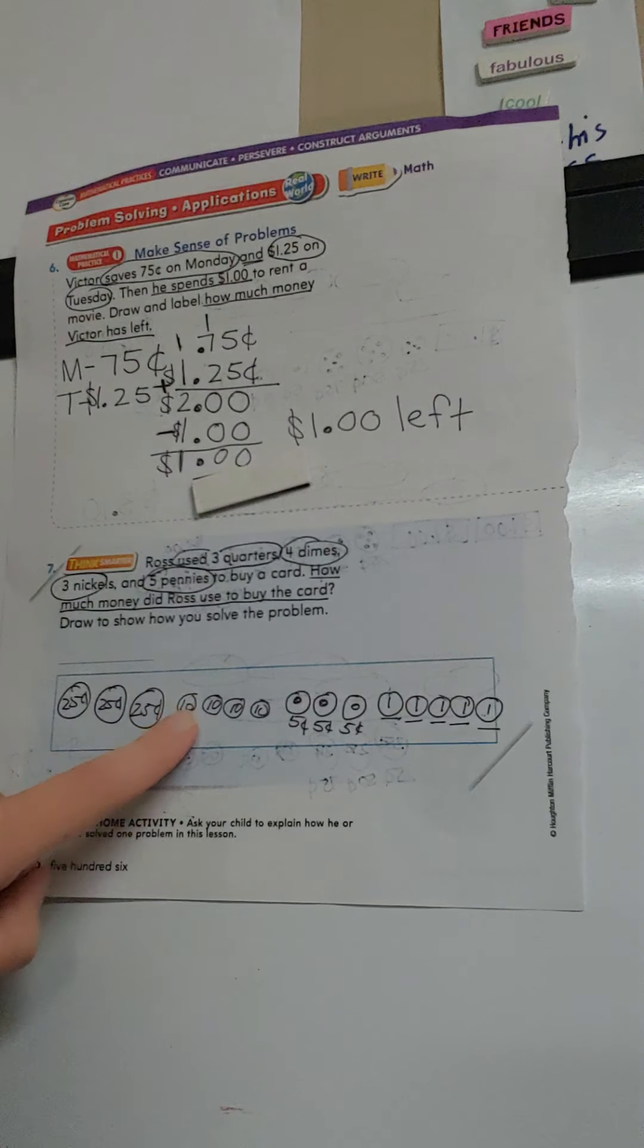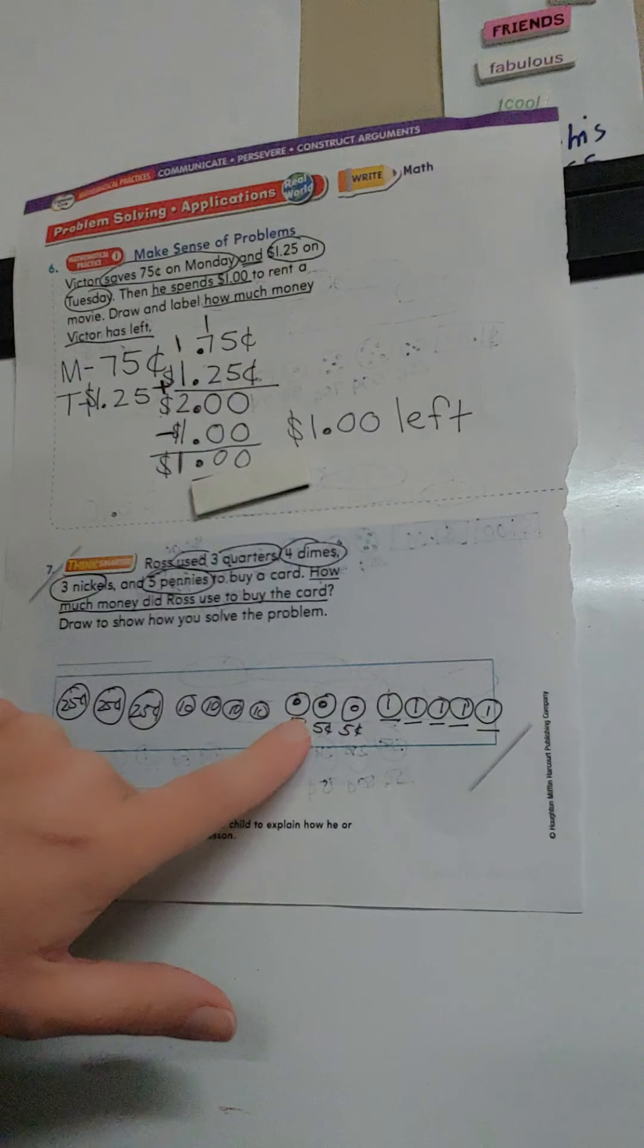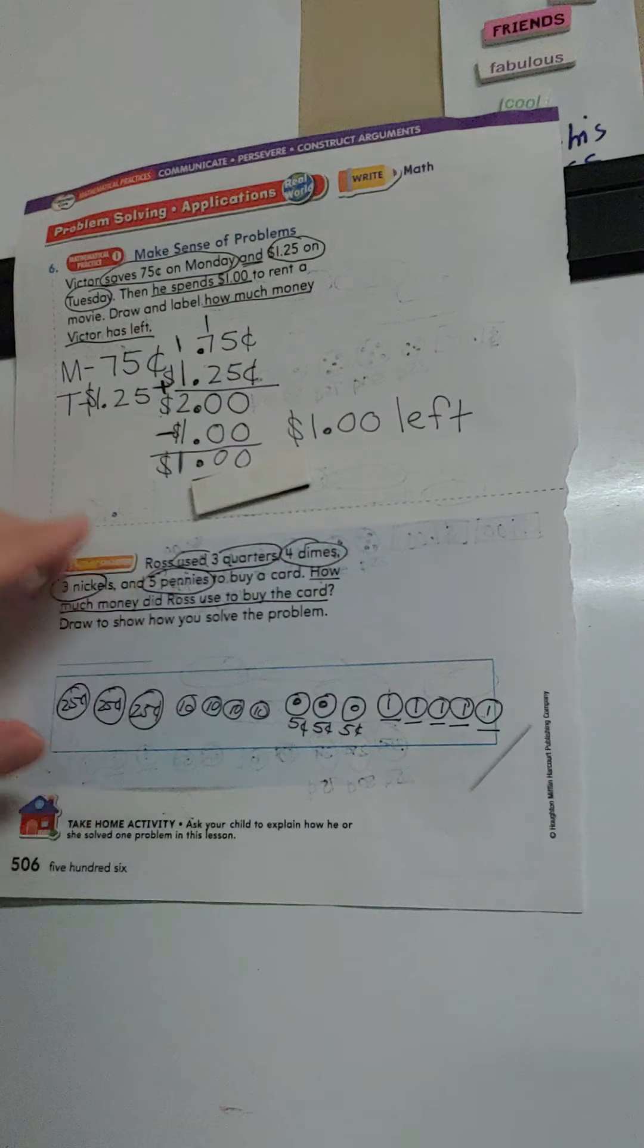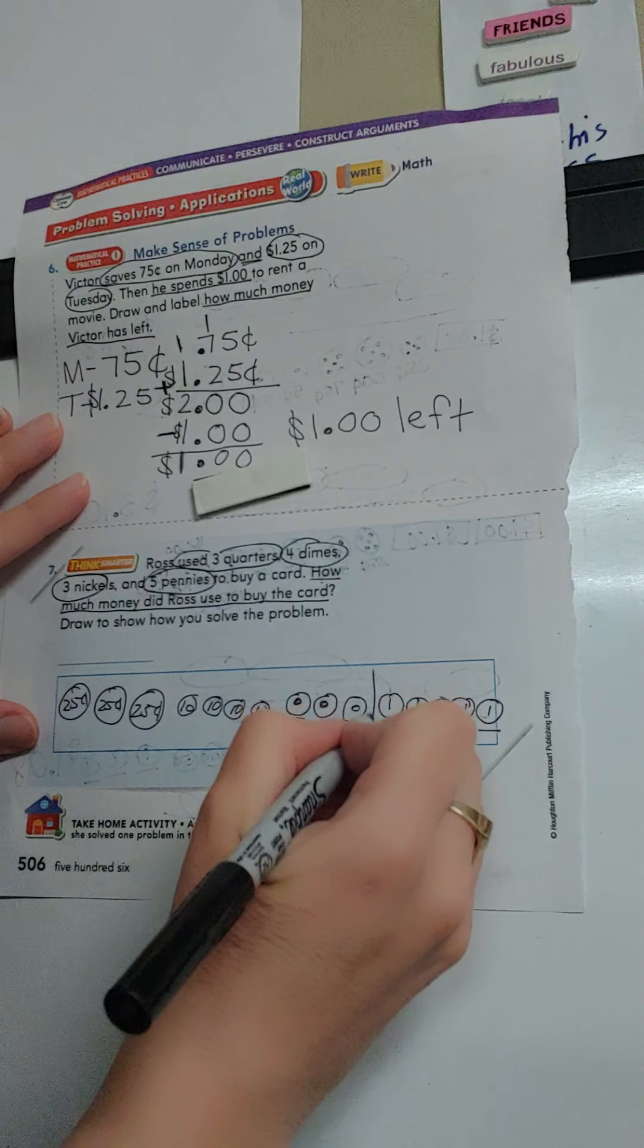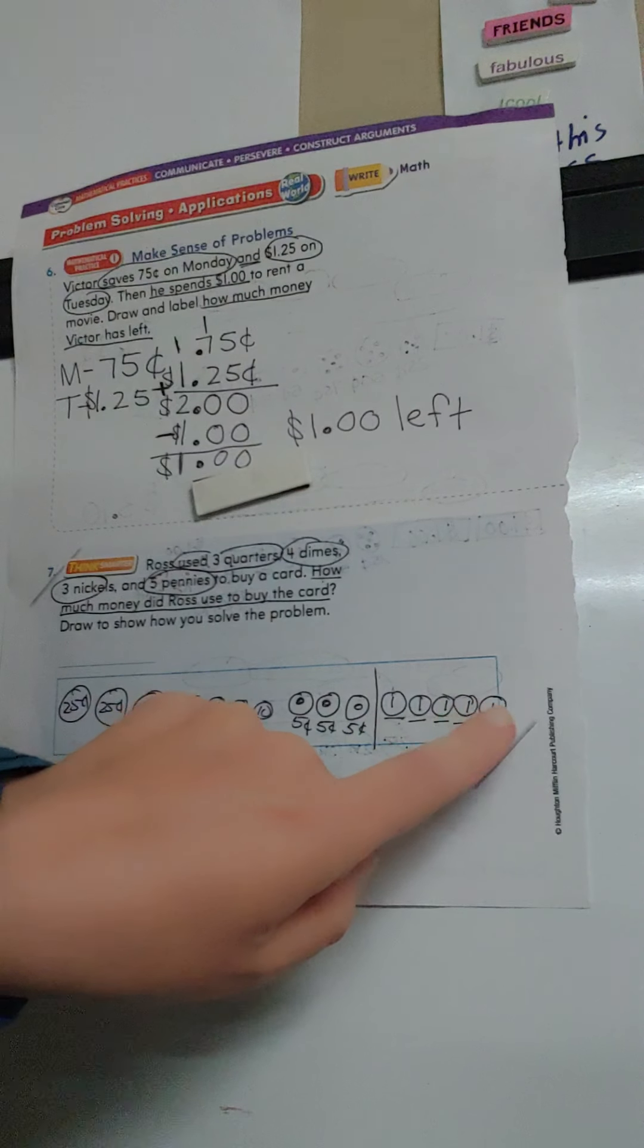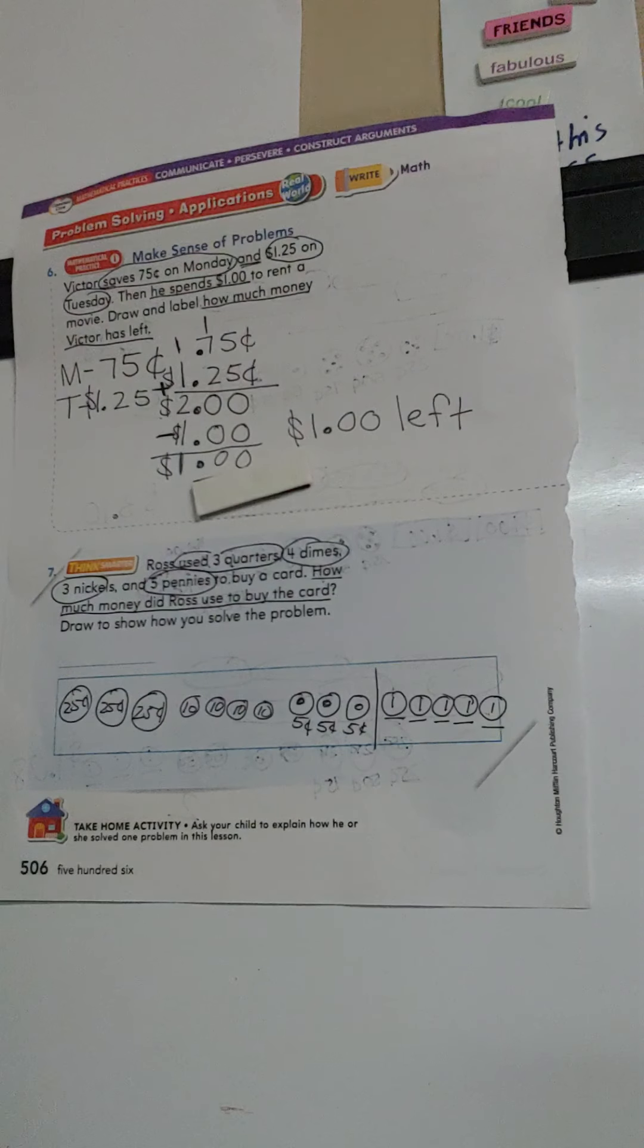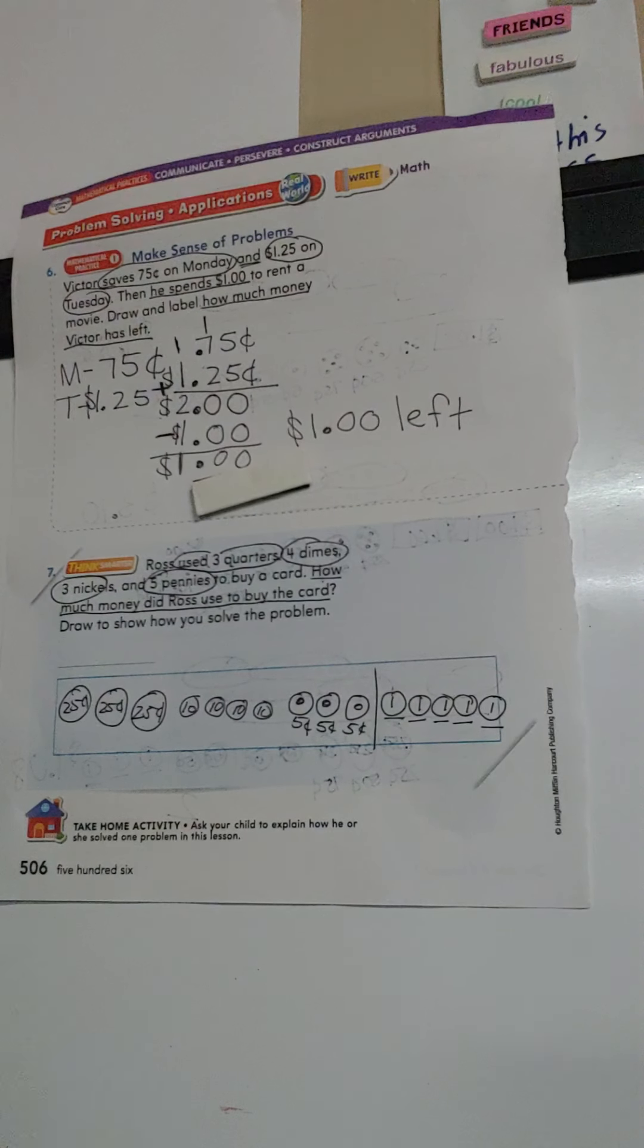We have dimes that are each worth ten. So we'll count by tens. We have nickels that are worth five. So when we get here, we're going to start counting by fives. And then our pennies. So we don't forget that when we get to our pennies, we're going to count just by one. So I'll put my line there to help me remember. Let's do it.